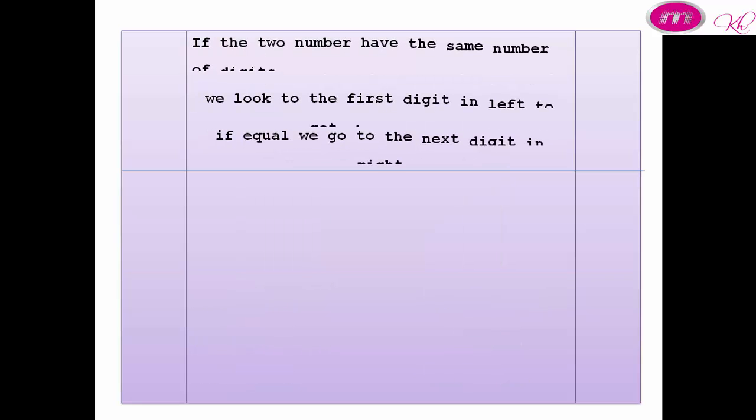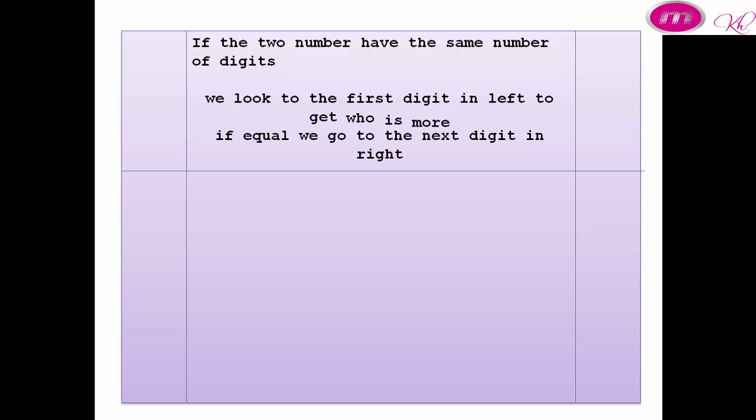If two numbers have the same number of digits, what can we do? We look at the first digit on the left to find which is more. If they are equal, we go to the next digit on the right.